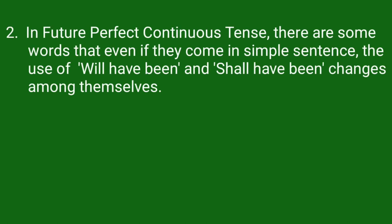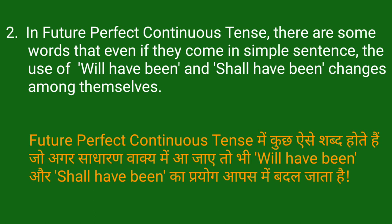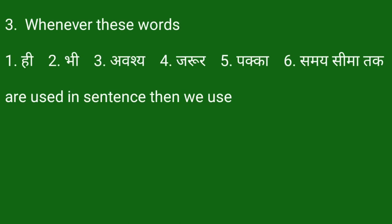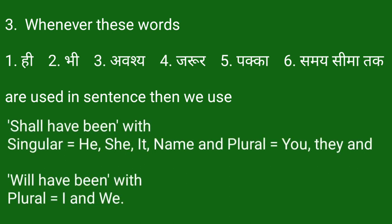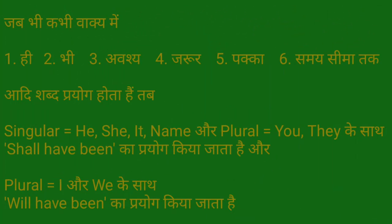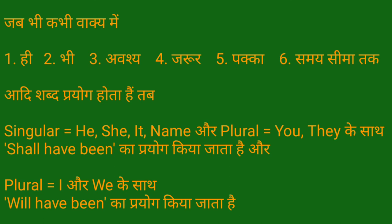Second point: in Future Perfect Continuous Tense, there are some words that, even if they come in a simple sentence, cause the use of 'will have been' and 'shall have been' to change among themselves. Third point: whenever words like 'he be', 'अवश्य', 'जरूर', 'पक्का', 'समय सीमा' etc. are used in a sentence, then we use 'shall have been' with singular he, she, it, name and plural you, they; and 'will have been' with I and we.